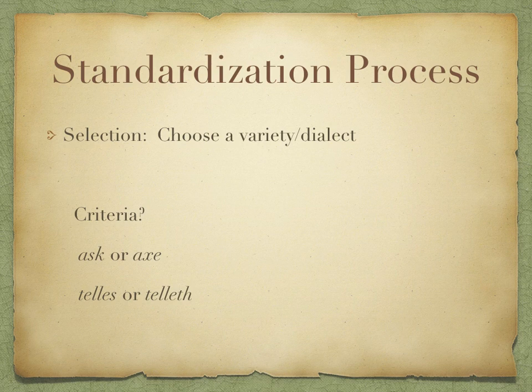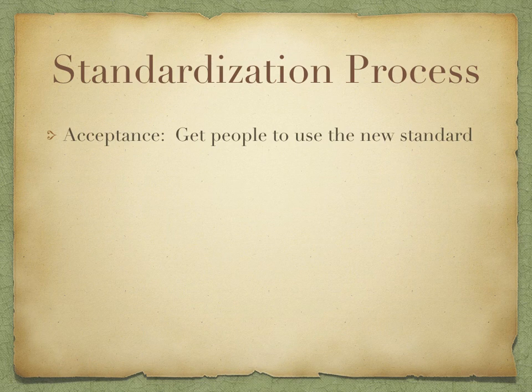That's definitely not what happened in the case of English. Instead, the forms that won out tended to be those that were used by the people in power. Generally speaking, it was the forms associated with the East Midlands dialect from the Middle English period — the form used by people in Oxford and Cambridge, the academic centers, as well as by the upper classes in London. So those are the forms that won out: the forms that were associated with that part of society.